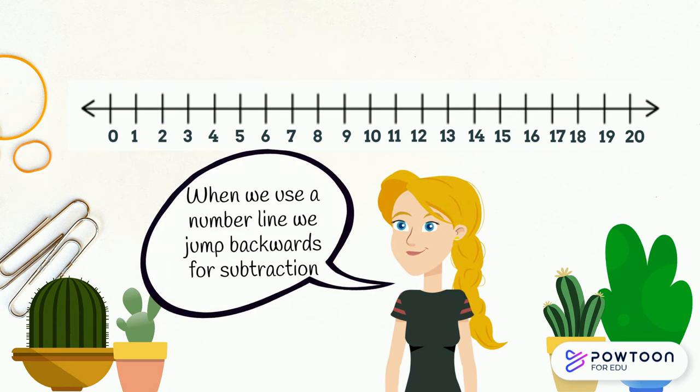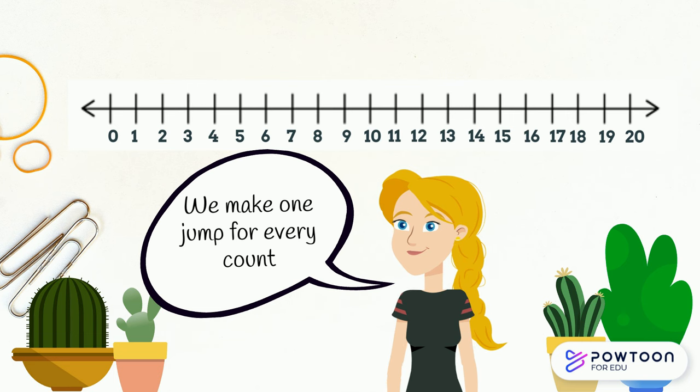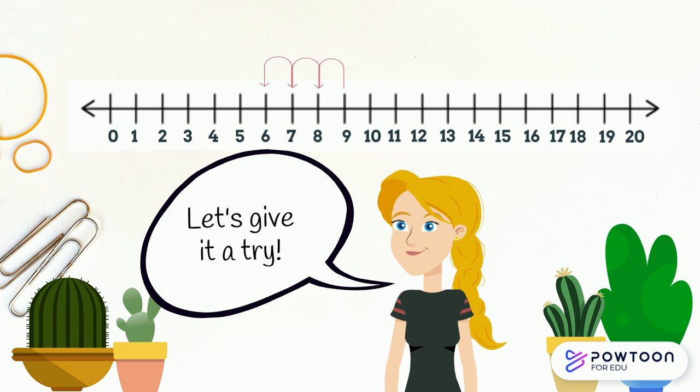When we use a number line, we jump backwards for subtraction. We make one jump for every count. Let's give it a try.